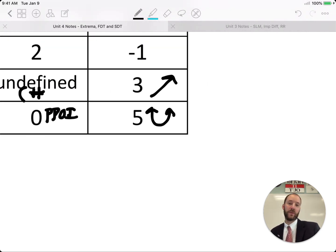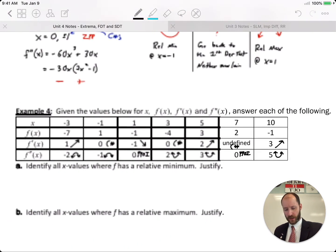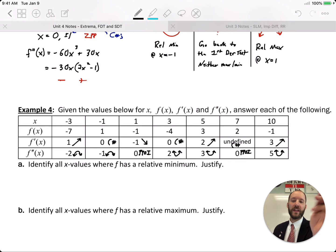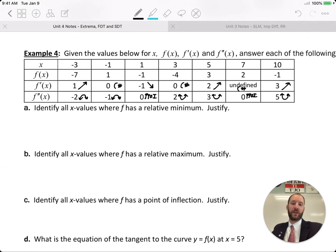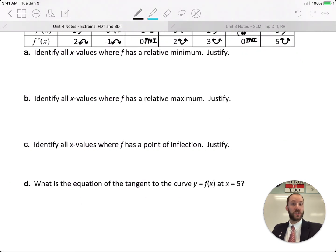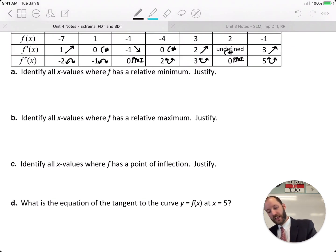So do yourself a favor, mark up what you know about this graph and now it should be clear where relative minimums are, relative maxes, points of inflection, and question d about an equation of a tangent line. For each question, at least three of them, justify why. Take a look at those and check the complete notes online.